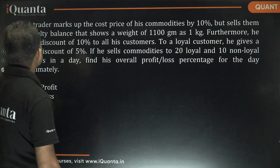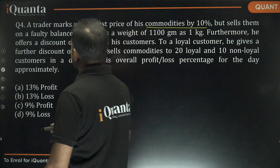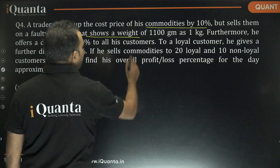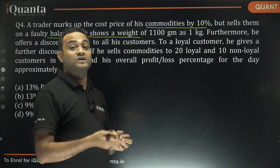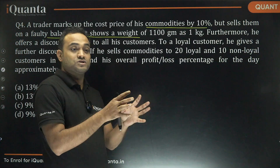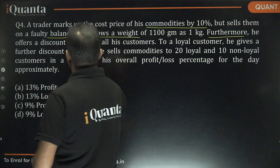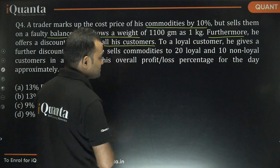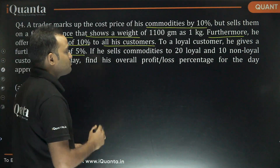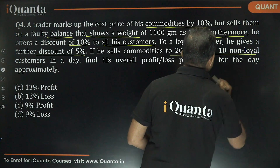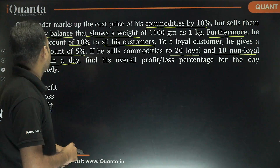The fourth question: A trader marks up the cost price by 10%, but sells on a faulty balance that shows 1100 grams as 1 kg — meaning he gives 1100 grams but charges for 1 kg. He also offers a 10% discount to all customers. To loyal customers, he gives a further 5% discount. He sells to 20 loyal and 10 non-loyal customers in a day. Find his overall profit or loss percentage.